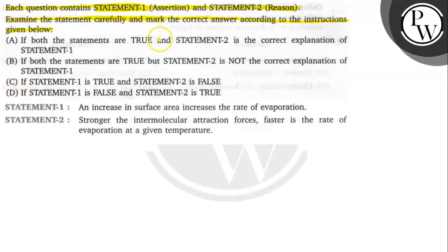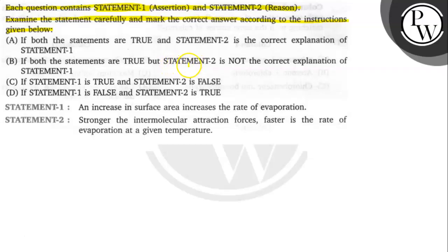If both statements are true and Statement 2 is the correct explanation of Statement 1, then we will choose A. If both statements are true but Statement 2 is not the correct explanation of Statement 1, then we will choose B. If Statement 1 is true and Statement 2 is false, then we will choose C. If Statement 1 is false and Statement 2 is true, then we will choose D.